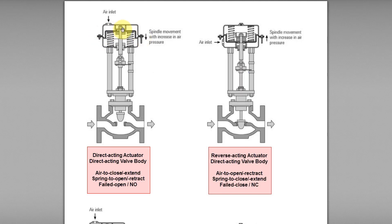How do we know if this actuator is direct acting or reverse acting? For a direct acting actuator, the air is applied to the upper portion of the actuator. If the pneumatic air is applied to the lower part of the actuator, it is called a reverse acting actuator.